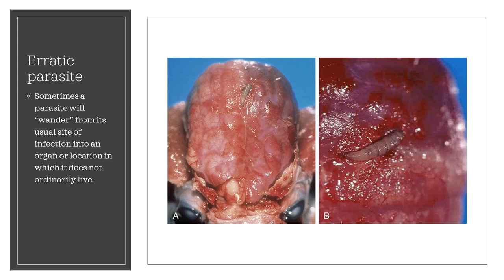Sometimes a parasite will wander from its usual site of infection into an organ or location in which it does not ordinarily live. When this happens, the parasite is called an erratic or aberrant parasite. An example of this is Cuterebra — a fly species found in the skin of dogs or cats that may accidentally wander or migrate into the skullcap.